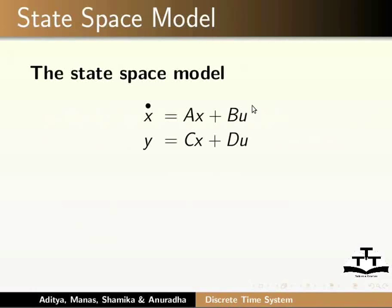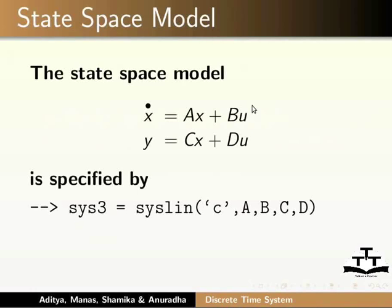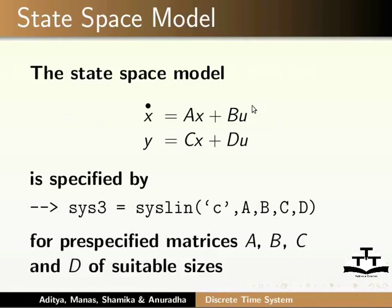The state space model x-dot = Ax + Bu, y = Cx + Du is specified by: sys3 = syslin('c', A, B, C, D), where A, B, C, and D are pre-specified matrices of suitable sizes. Start Scilab on your computer.